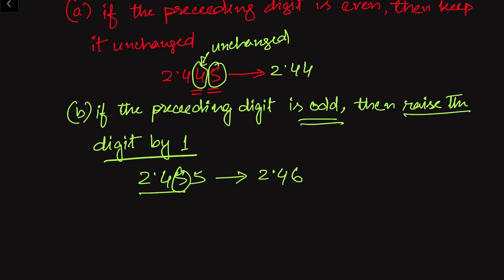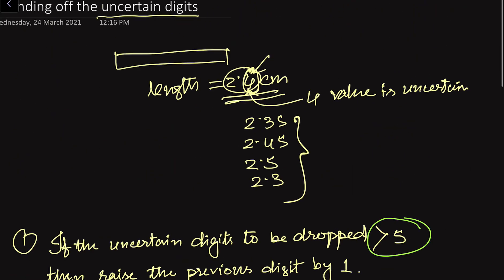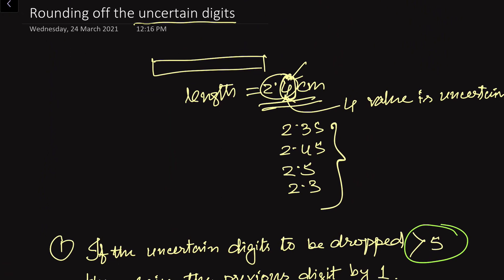Why do we keep the previous digit unchanged for an even number, and raise it by 1 for an odd number? Because in most cases an even number is divisible by more factors, so in any arithmetic or mathematical operation it becomes easier to operate on an even number. That is the reason for this rule. In this way we have rounded up this number to three significant digits.